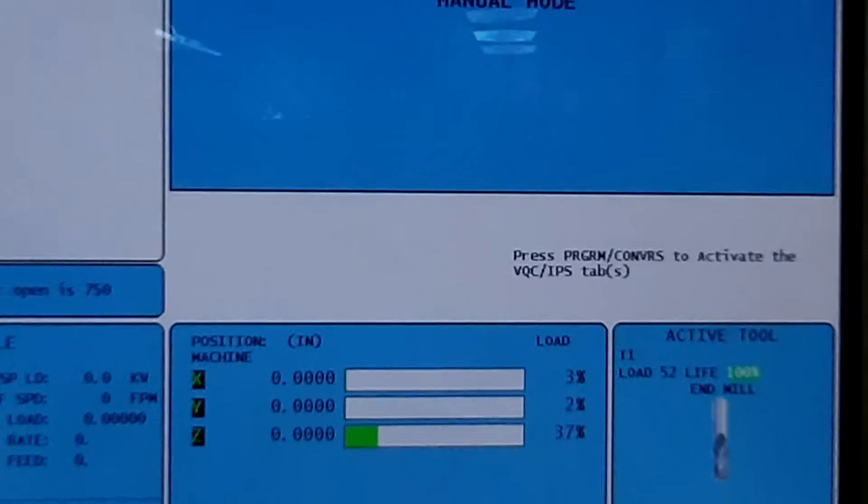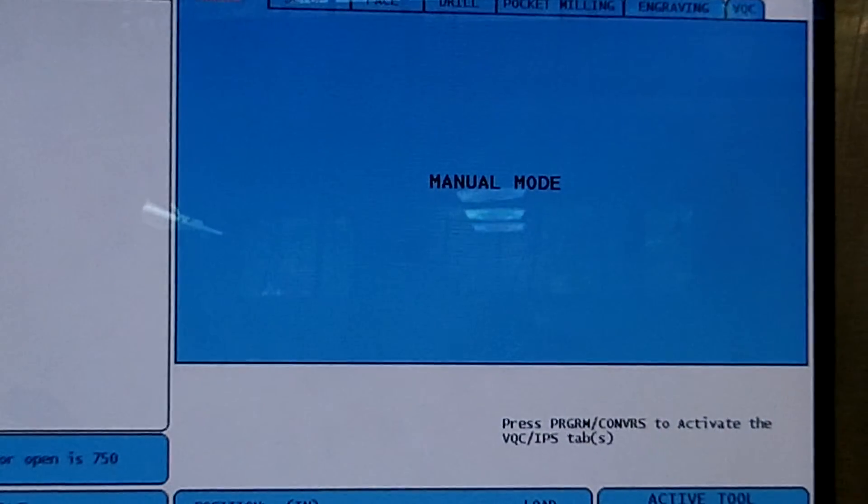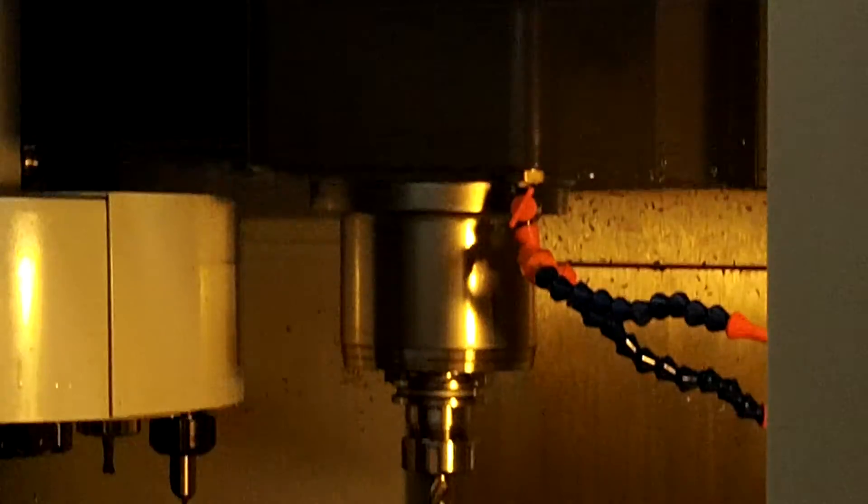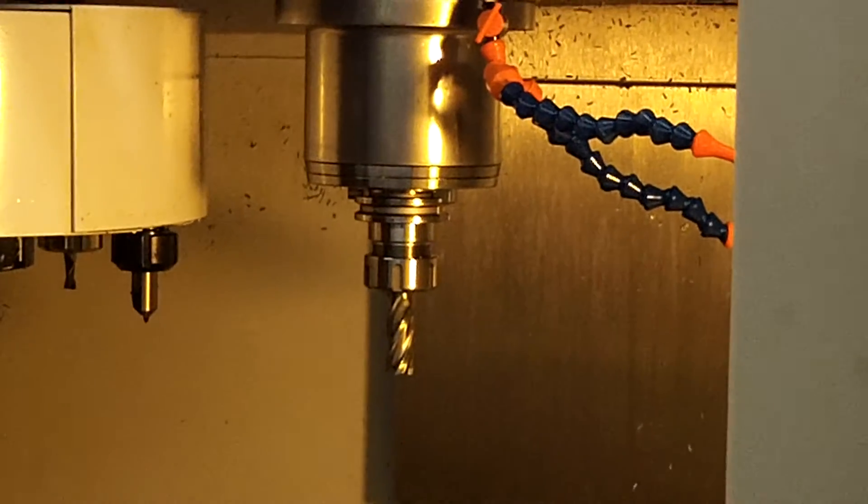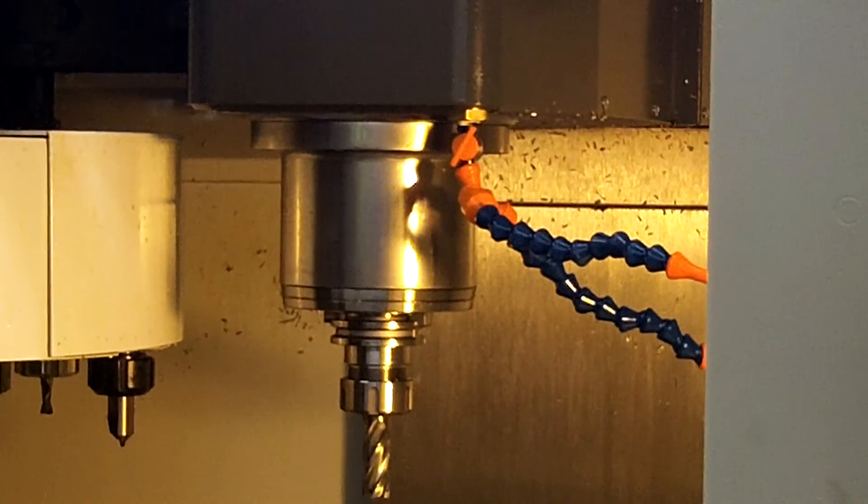The screen will then come up and show you a manual mode. At this point, we will be able to remove the tool from the spindle.